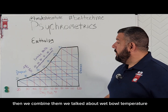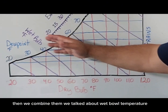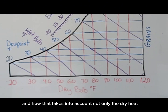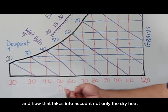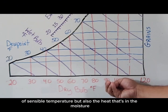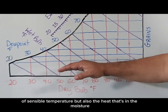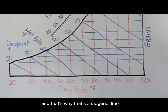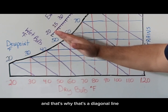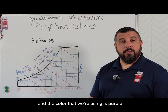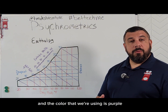Then we combined them. We talked about wet bulb temperature and how that takes into account not only the dry heat of sensible temperature, but also the heat that's in the moisture. And that's why that's a diagonal line, and the color that we're using is purple.